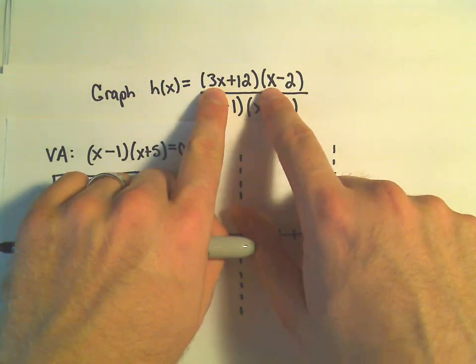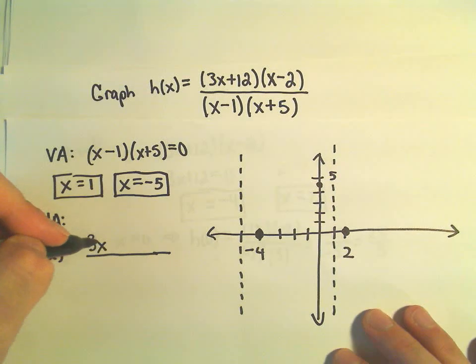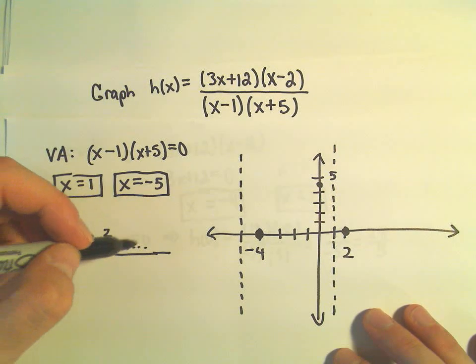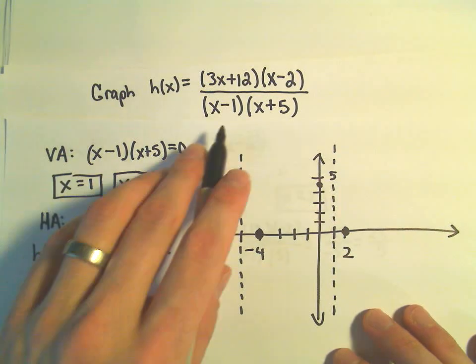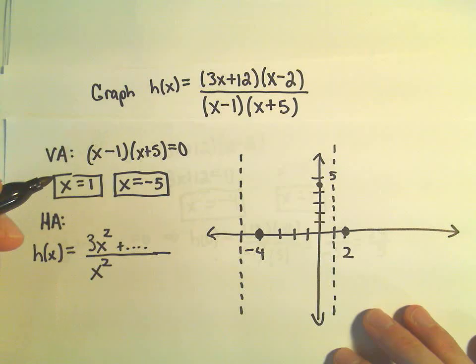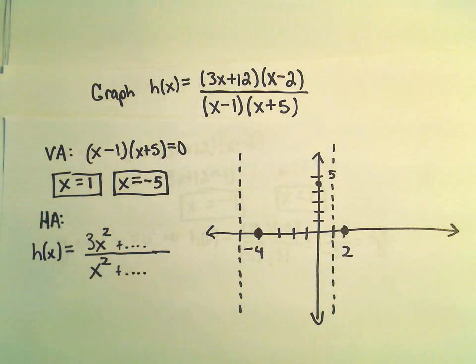So if I multiply 3x and x, I'm going to get 3x squared. And then we'll have some other stuff, but it's going to be smaller degree. We'll have some x's and a constant. Notice in the denominator, we'll get x times x, which is x squared. And then we'll get an x term and a constant as well.